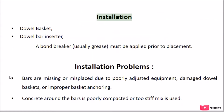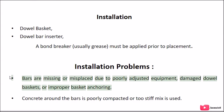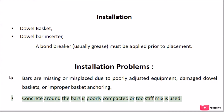Installation methods include the Dowel Basket and the Dowel Bar Inserter. A bond-breaker, usually grease, must be applied prior to placement. Installation problems include bars that are missing or misplaced due to poorly adjusted equipment, damaged dowel baskets, or improper basket anchoring. Concrete around the bars may also be poorly compacted, or a too-stiff mix may be used.